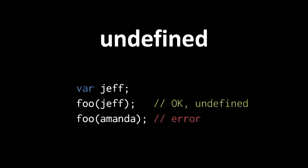So here, for instance, if we declare a variable named Jeff without any initial value and then pass Jeff as argument to a function, the parameter for that argument receives the value undefined. In contrast, a variable which hasn't been declared doesn't exist, and so if we attempt to use an undeclared variable, like Amanda here, that triggers an error.